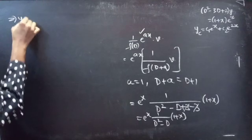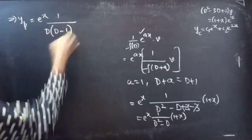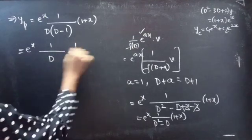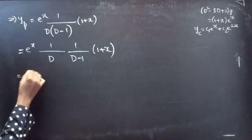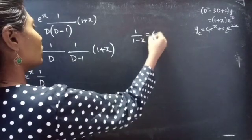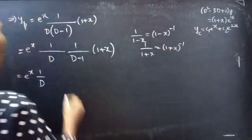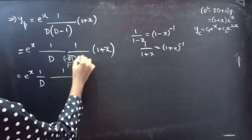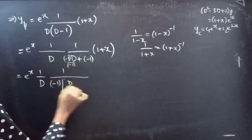So yp = eˣ · (1/(D² - D))·(1 + x). Taking D common from the denominator: D(D - 1). We can split this as (1/D)·(1/(D - 1))·(1 + x). Now, 1/(D - 1) is of the form 1/(1 - something), so taking minus common from the denominator: -1/(1 - D)·(1 + x), giving yp = -eˣ · (1/D)·(1/(1 - D))·(1 + x).